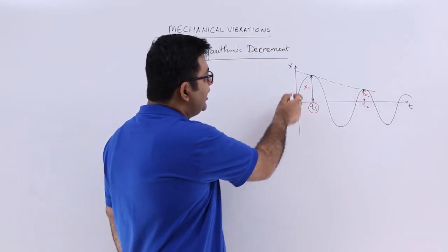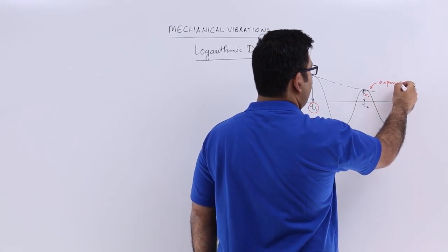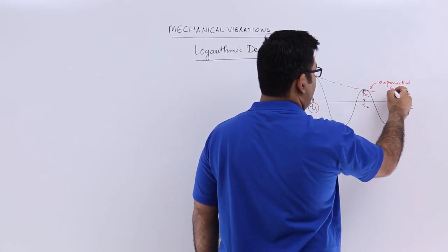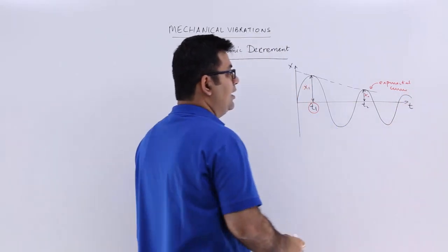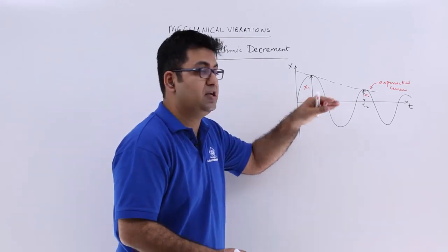This exponential curve shows that the decrease in amplitude of a periodic motion is exponential in nature.